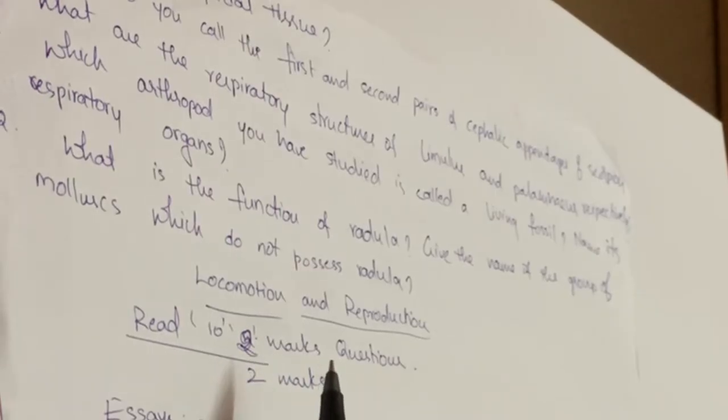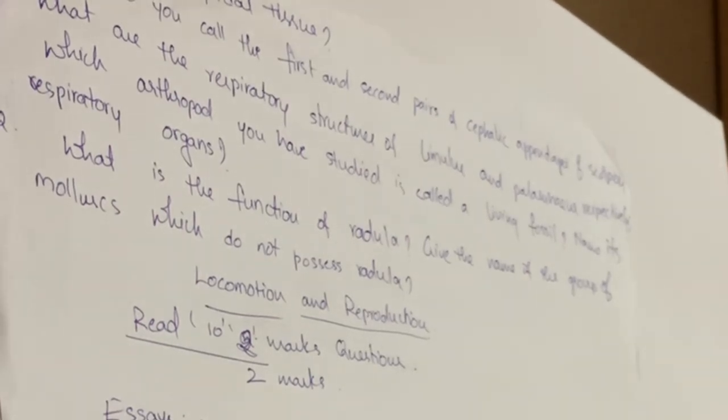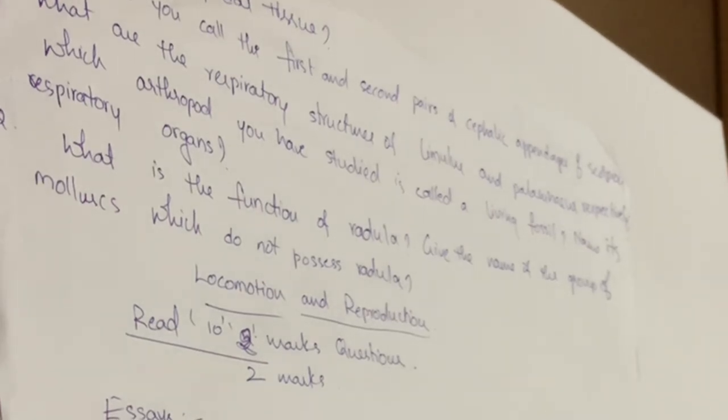You will definitely get one two-mark question from this. Remaining chapters you can leave. This is only for the advanced supplementary students, not for the betterment students. Betterment students can read this one thoroughly and prepare all other questions so you can get 60 out of 60.